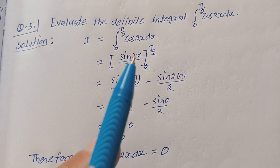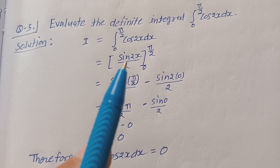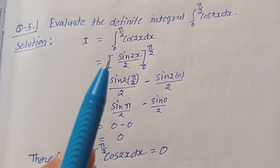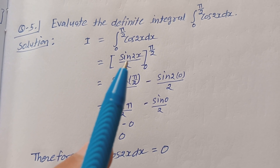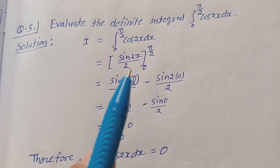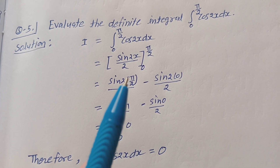The integration of cos(2x) is sin(2x)/2. So this equals bracket sin(2x)/2, with limits from 0 to π/2.